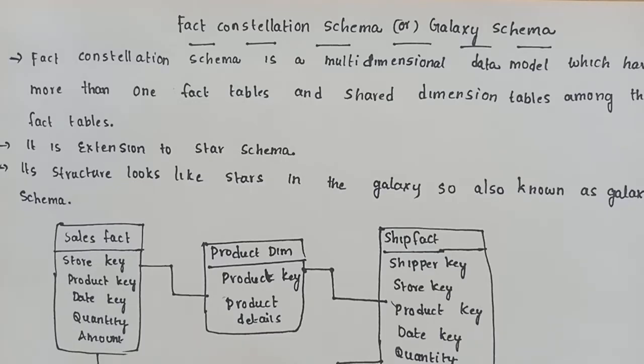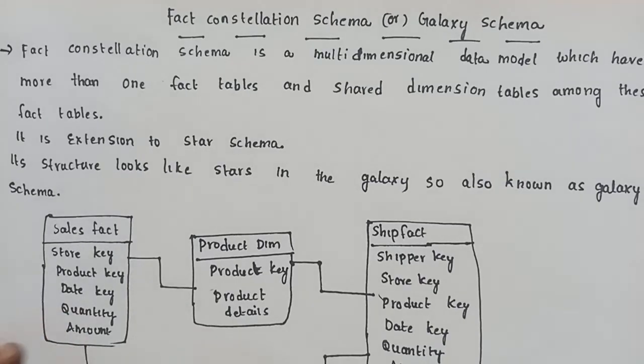Fact constellation schema is a multidimensional data model which has more than one fact table and shared dimension tables among the fact tables.